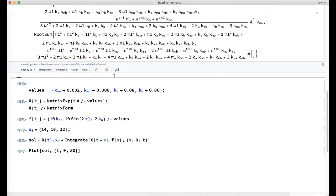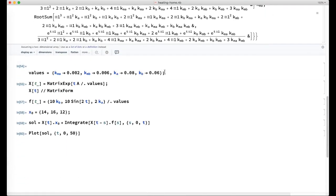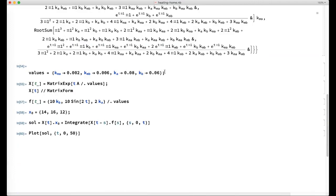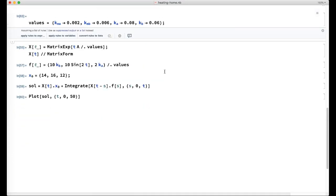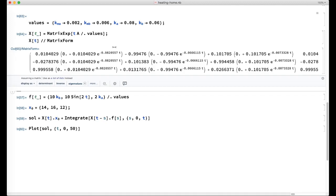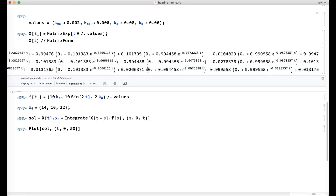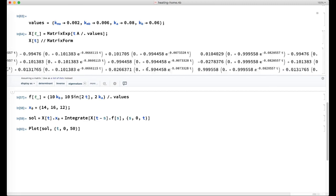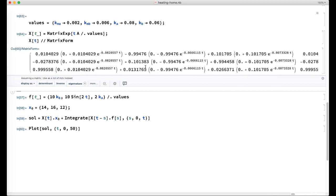I'll try to make it a little bit easier by just picking some numerical values for those constants. These are the rate constants between different compartments. And now if we evaluate the matrix exponential with those values, it's still pretty long. But it's, I guess, comprehensible.